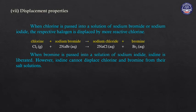Displacement properties: chlorine can displace bromide and iodide ions. Chlorine reacts with sodium bromide — the first part of the process produces sodium chloride and bromine is displaced.